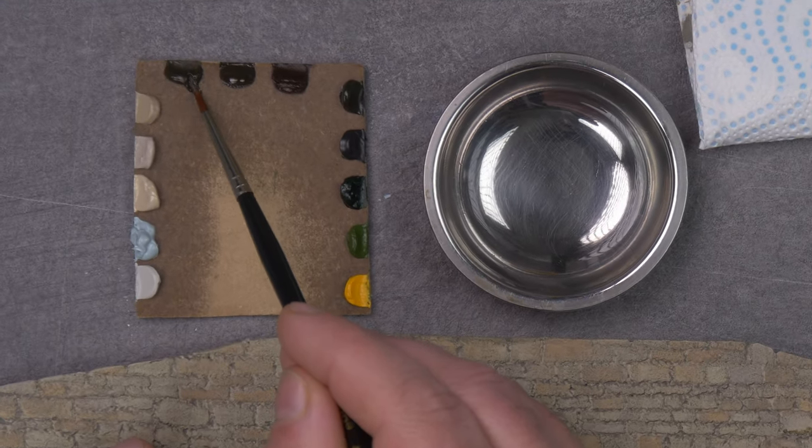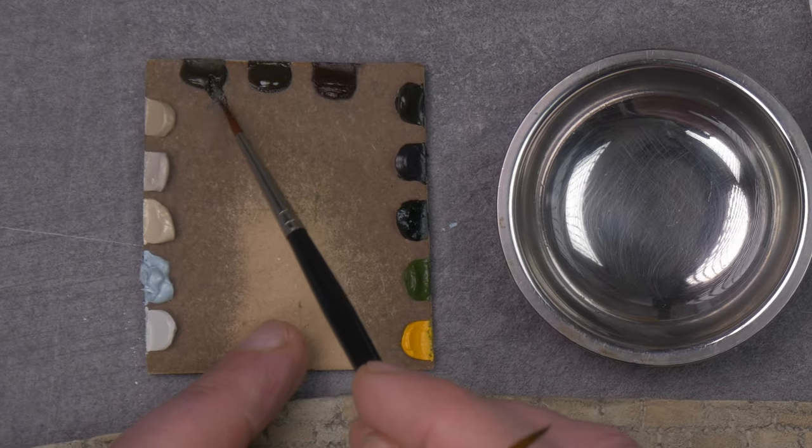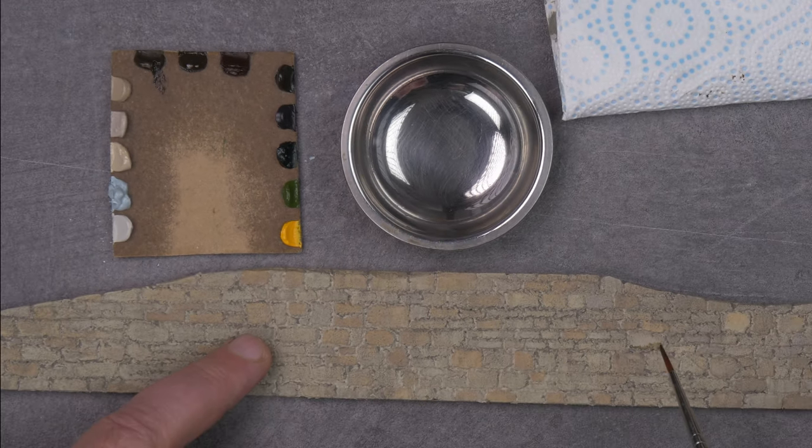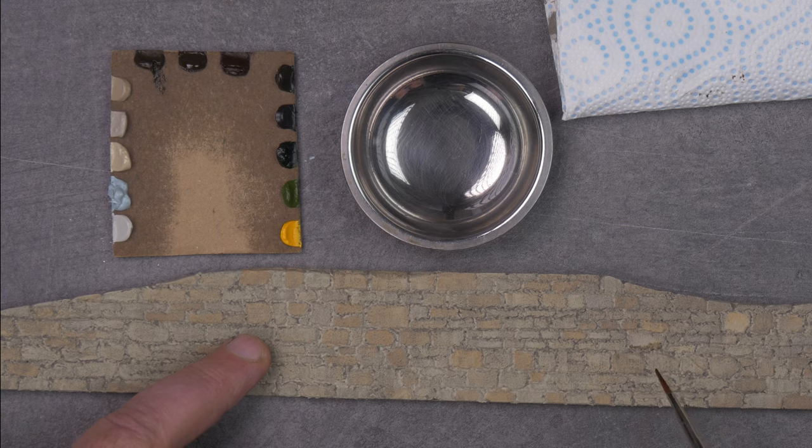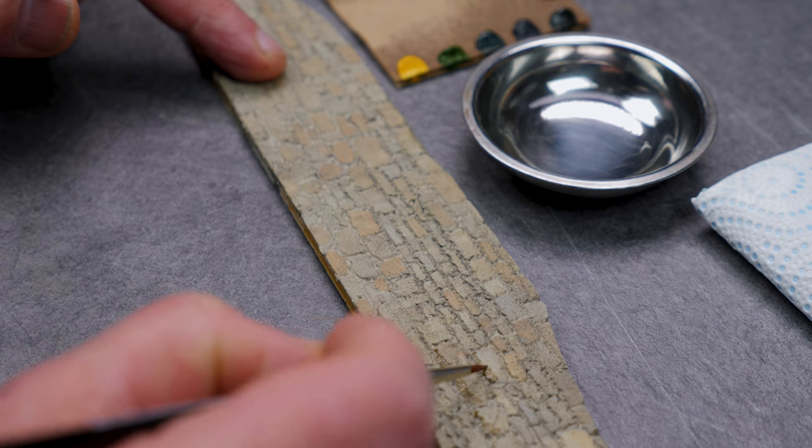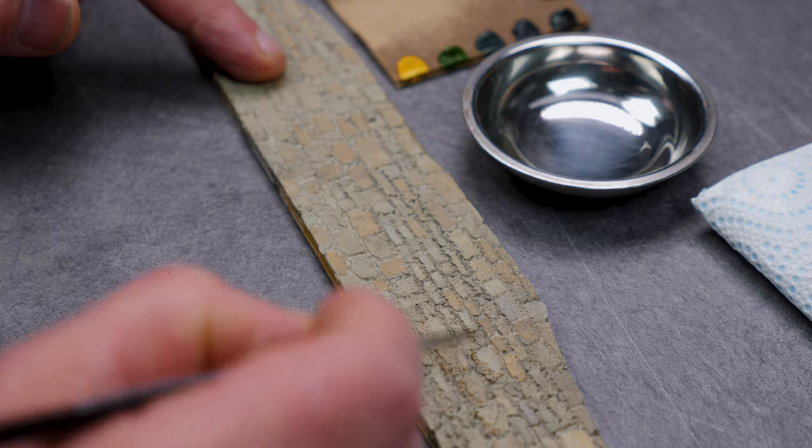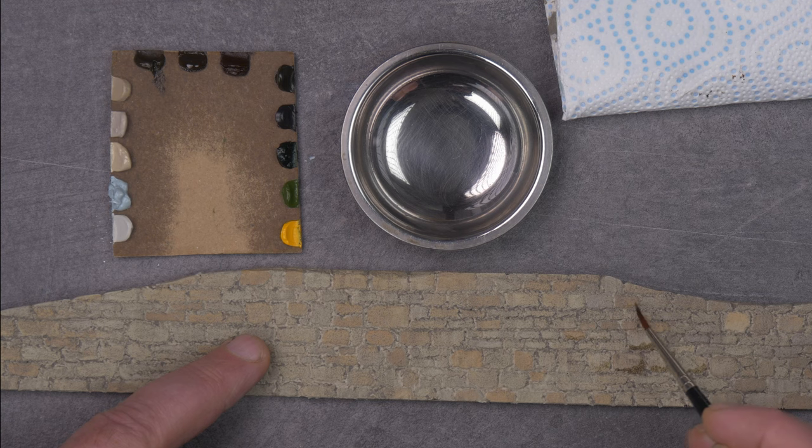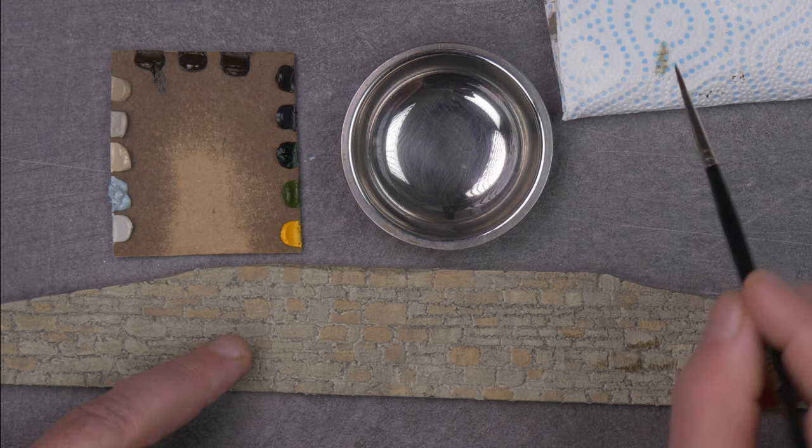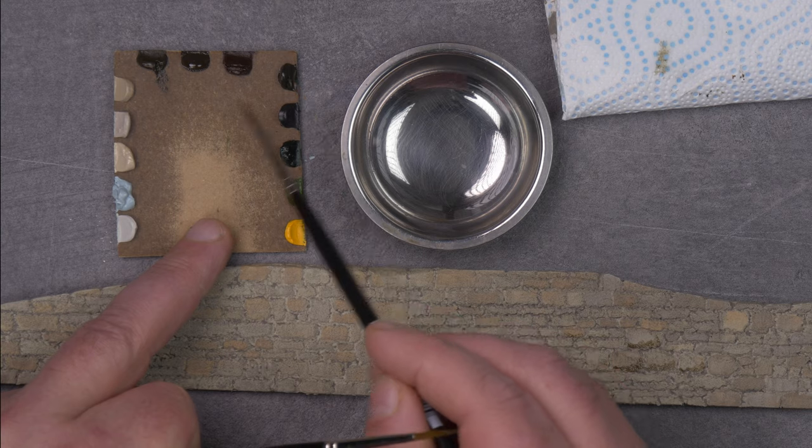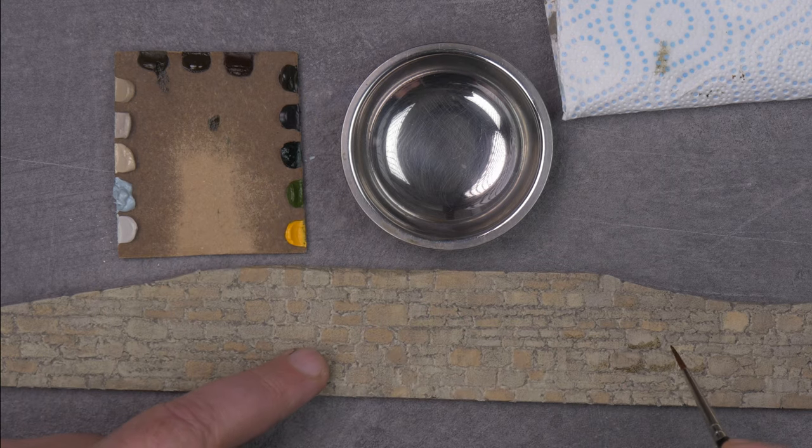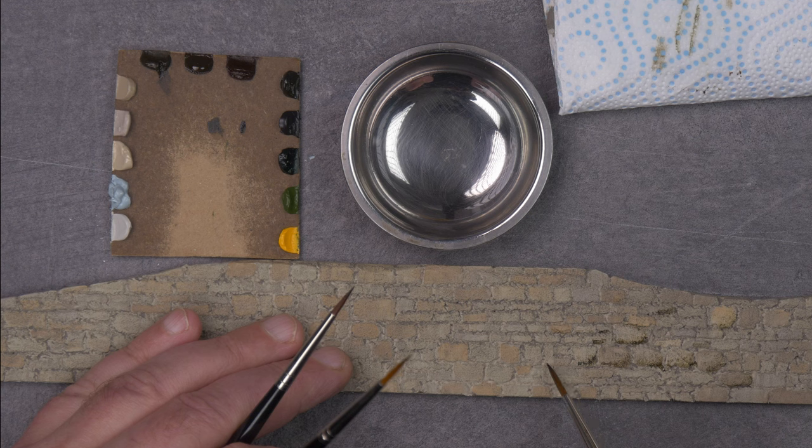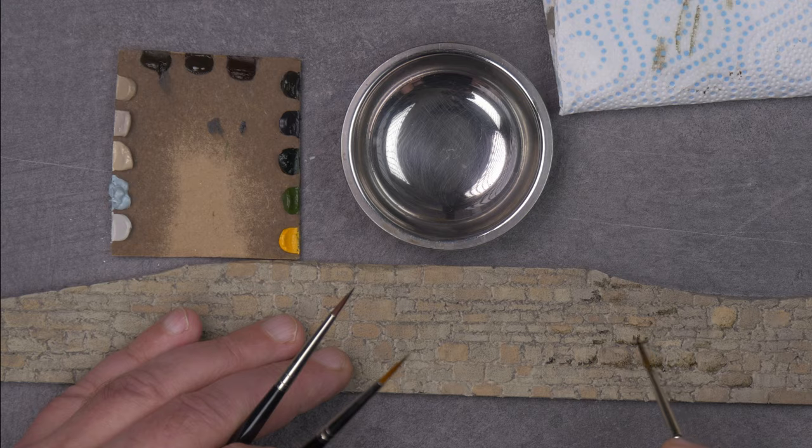Most of the time I start with a dark color like raw umber or a raw umber green tone. I will drop a bit on the bottom of the stones. So we paint a little bit. Oils tend to dry pretty slow, so you have lots of working time.